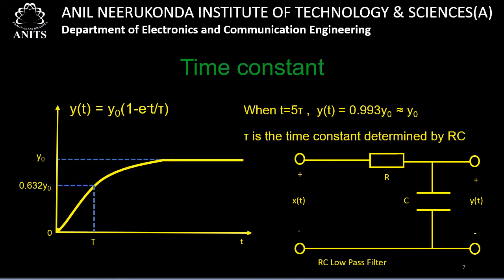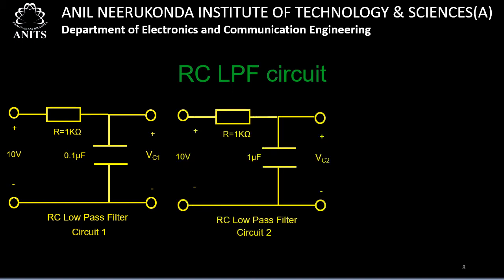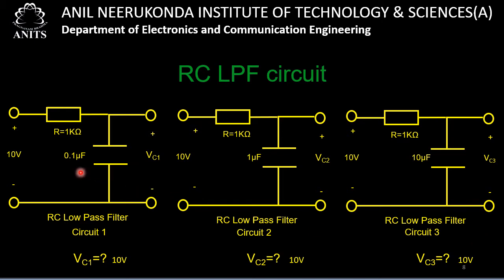τ is the time constant determined by RC. Let us consider three different RC circuits with the same input voltage. We need to estimate the voltage across the capacitor — VC1, VC2, and VC3 — in each circuit.